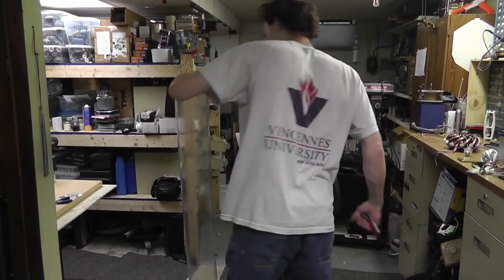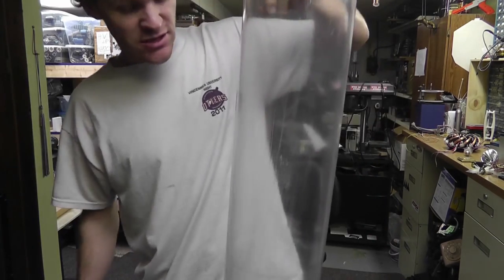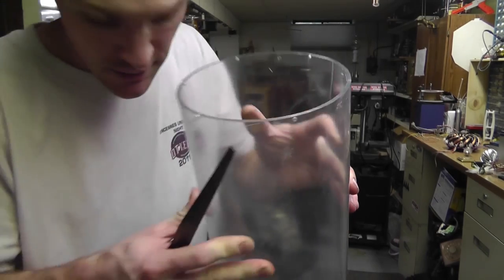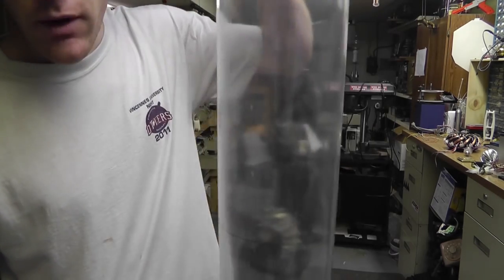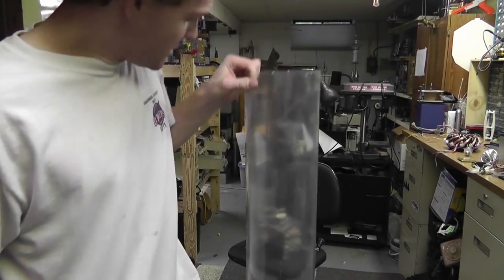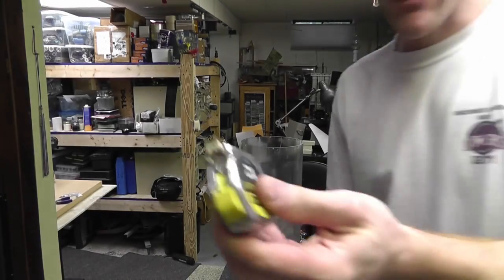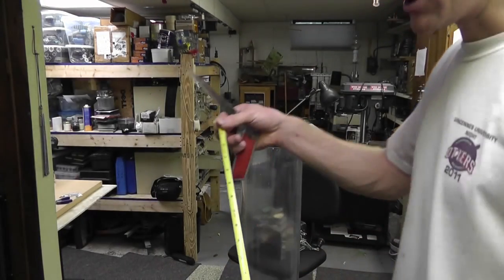So I got a piece of 6 inch polycarbonate, I believe it's polycarbonate tube, and I want to cut a 16 inch piece off here. So I grabbed the measuring stick or tape measure.